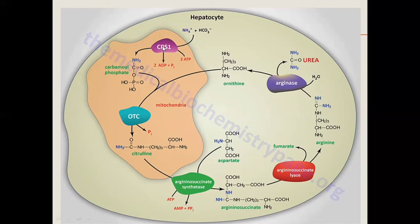So for urea cycle disorders, basically these five enzymes are involved. If there is a defect in any of them, then the reaction does not proceed properly. The first two reactions in mitochondria are more severe in terms of ammonia intoxication — ammonia accumulation — compared to the remaining three reactions in the cytoplasm, which are less toxic.